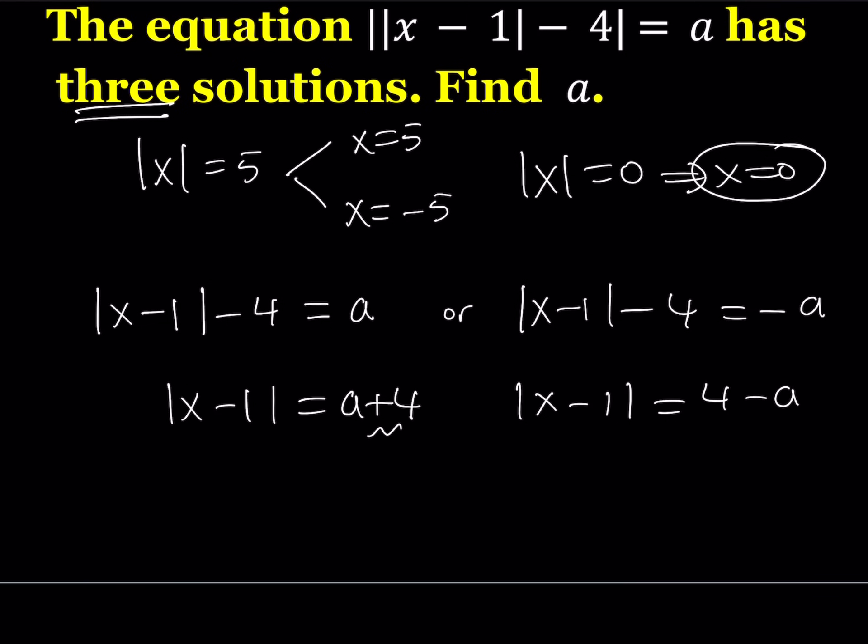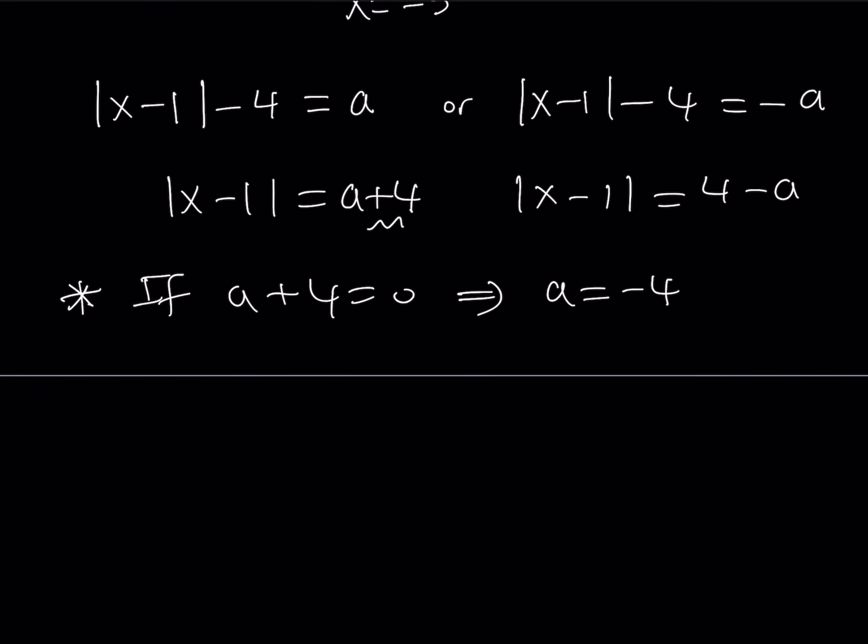Suppose this is equal to 0. Now, what happens if that's the case? We're going to look at it case by case. First case. If a plus 4 is equal to 0, then we get one solution from there. That's nice. This means that a is equal to negative 4. So if a equals negative 4, then I get x minus 1 equals 0, or the absolute value of x minus 1 equals 0. But this only gives me x equals 1. So that's one solution.